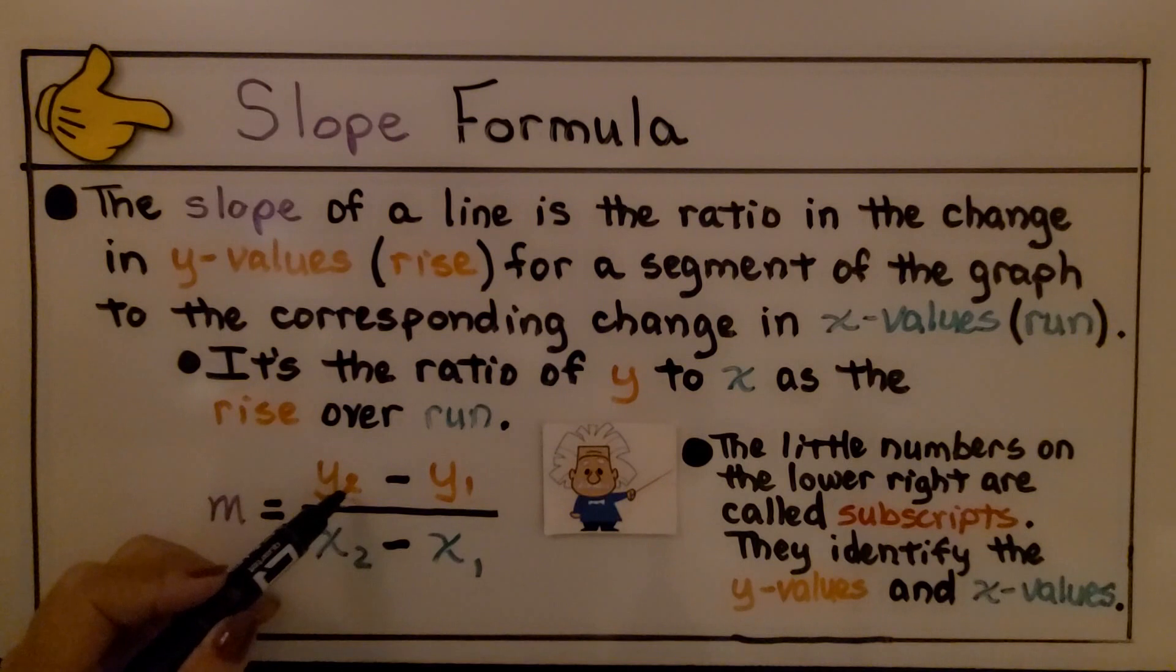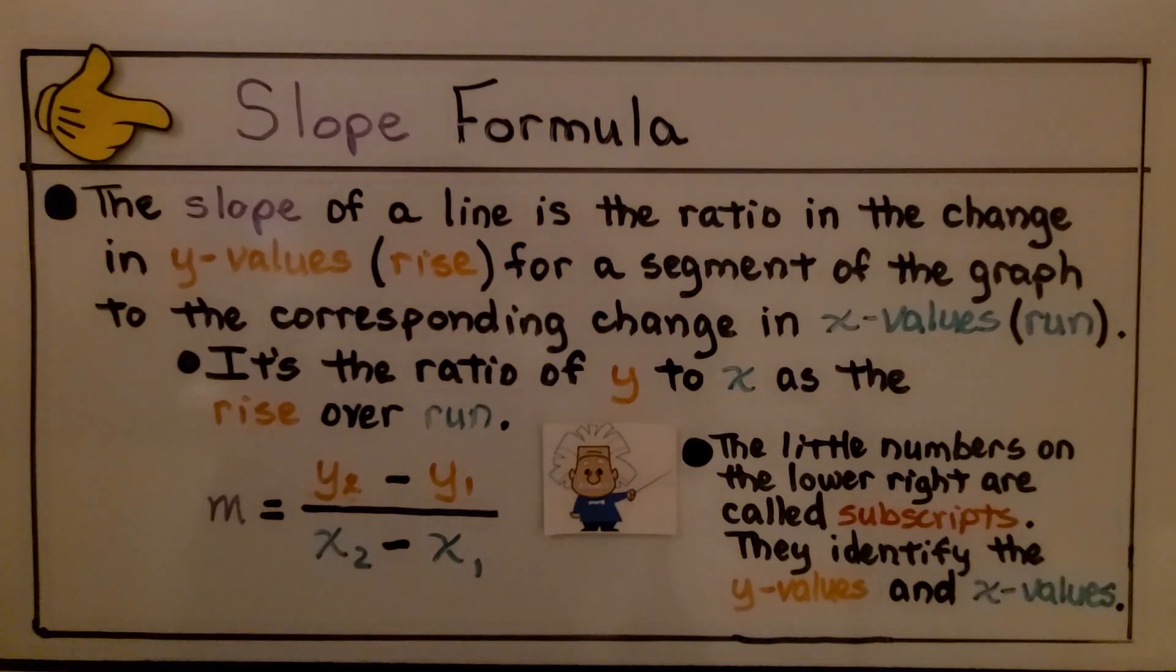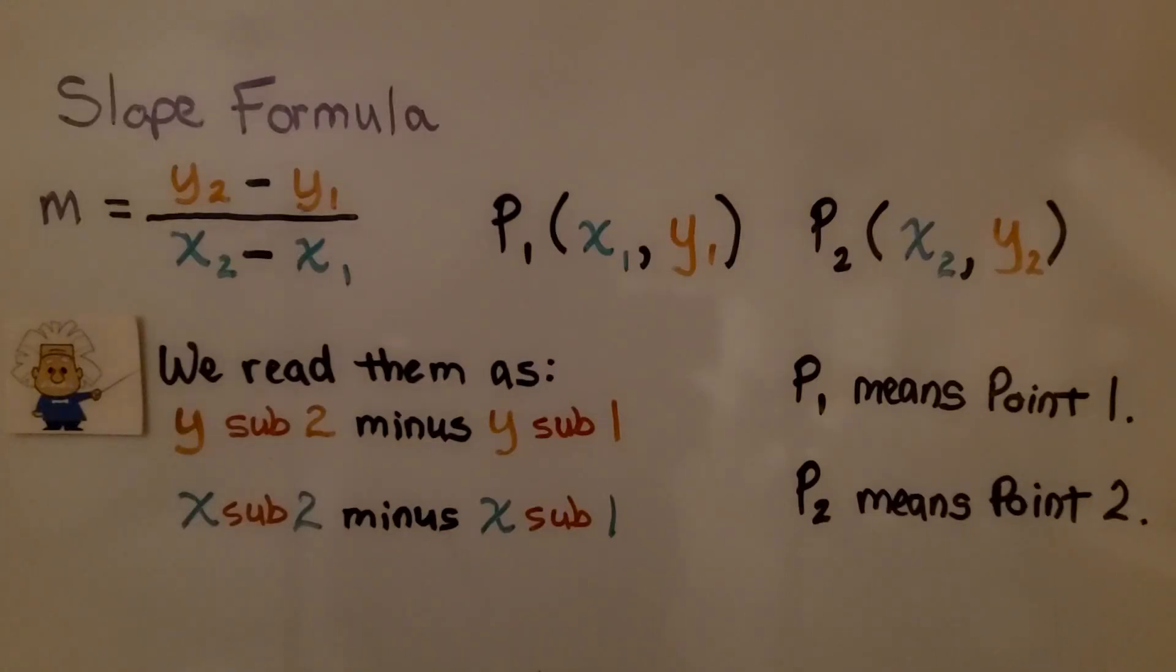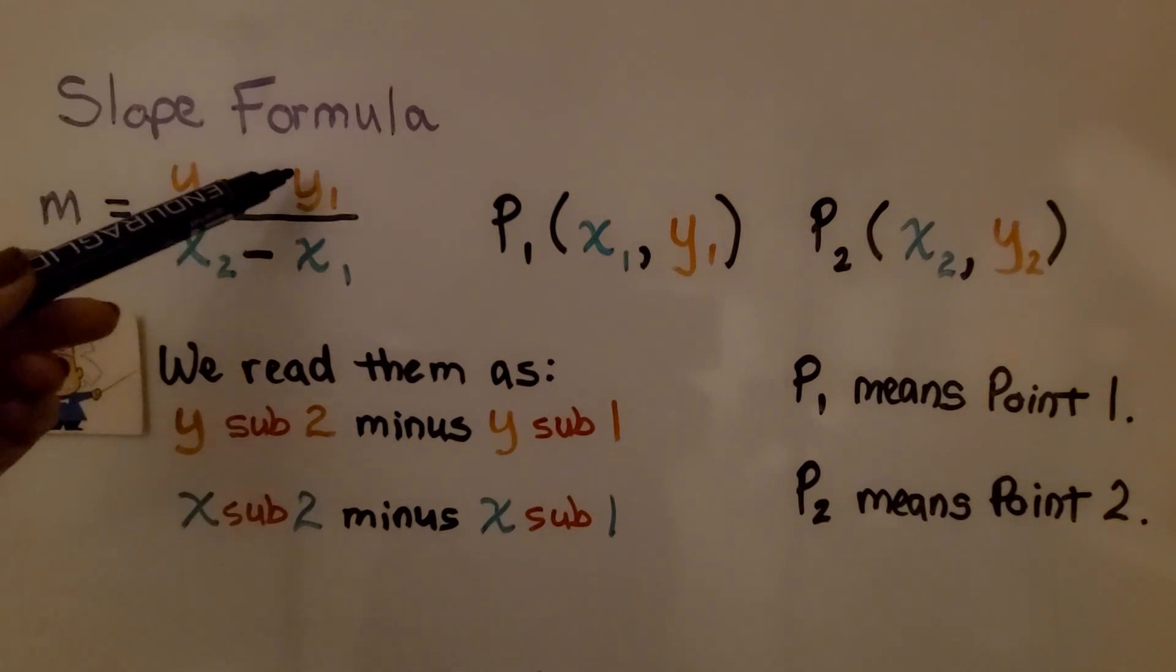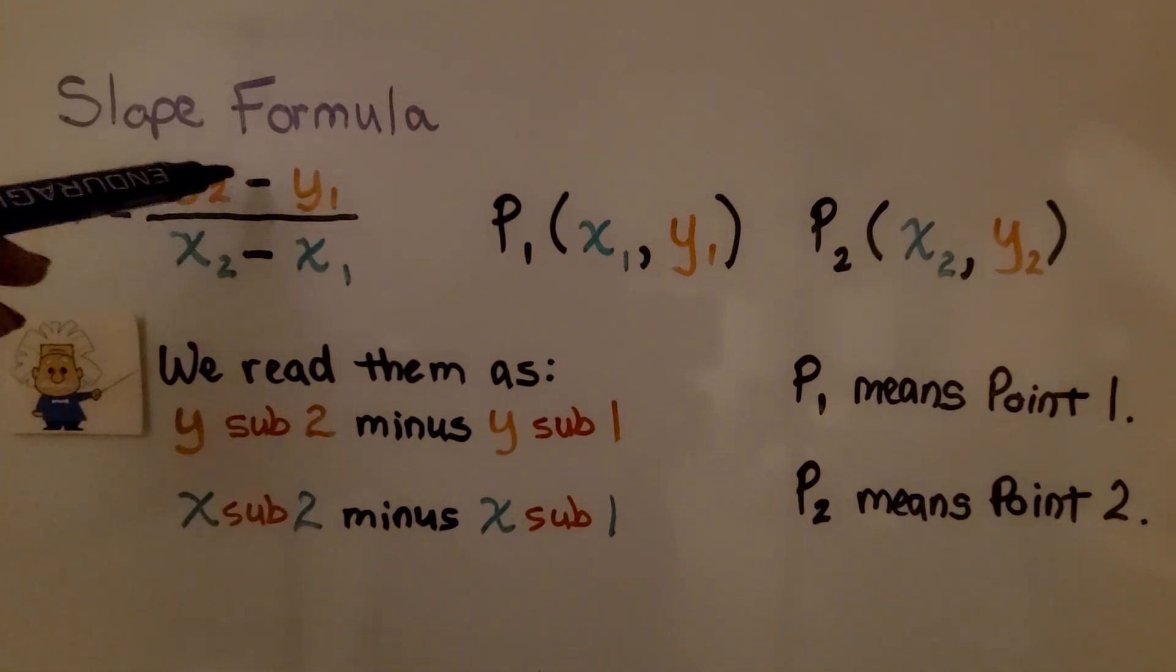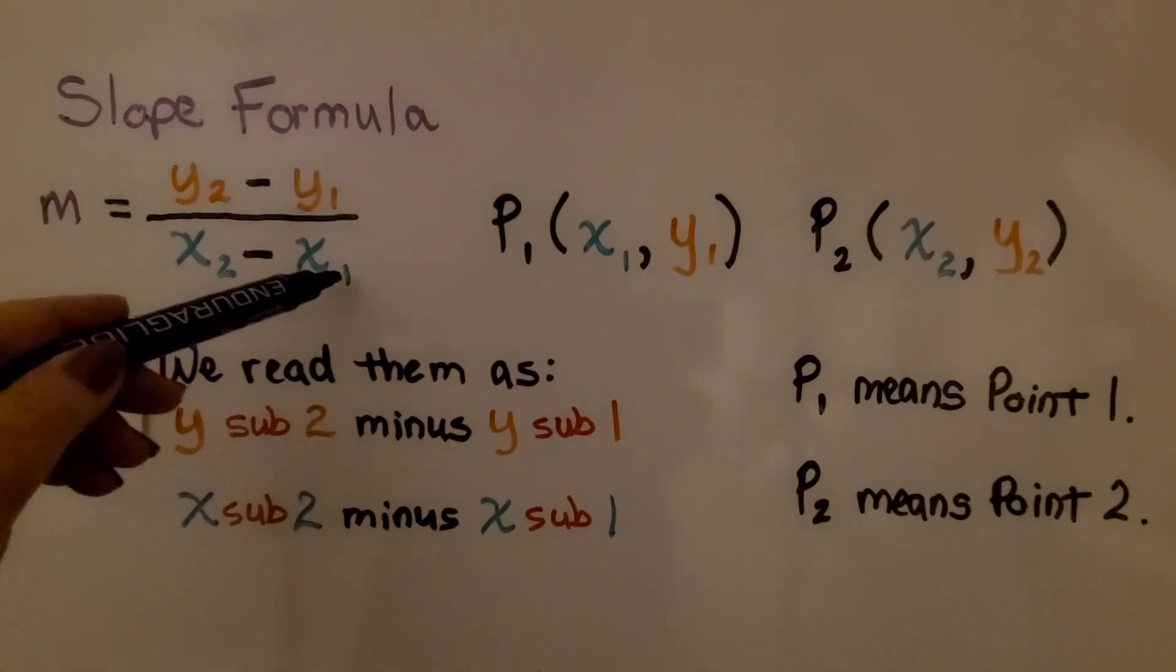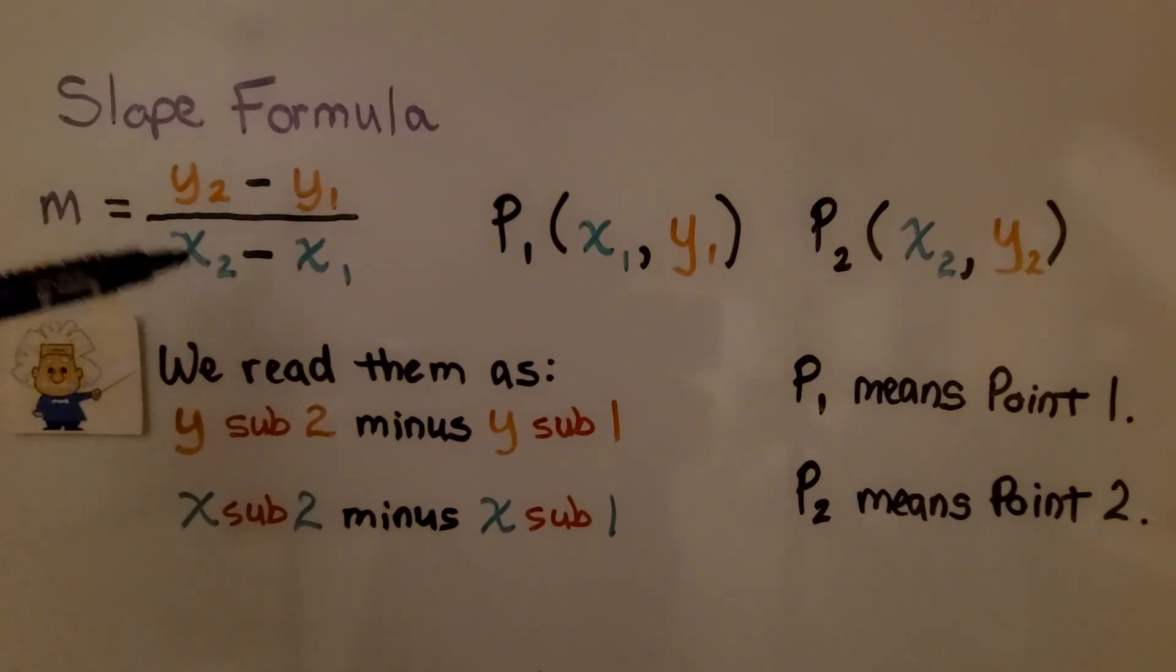Now you notice these little numbers here on the lower right. They're called subscripts. They identify the y values and the x values. For the slope formula, m stands for slope, and we have our second y value minus our first y value, and our second x value minus our first x value. We read them as y sub 2 minus y sub 1, and we have x sub 2 minus x sub 1.